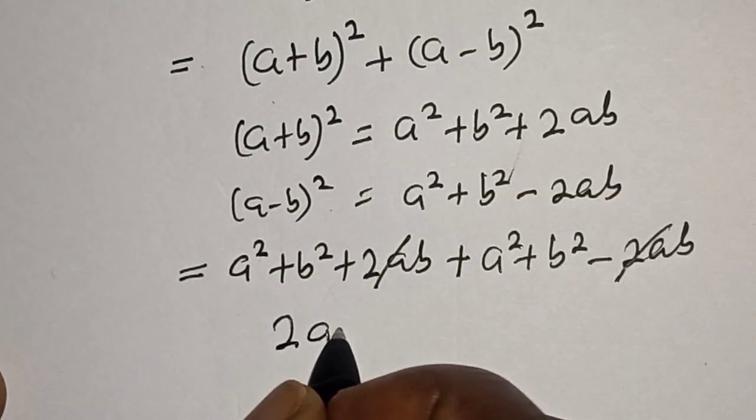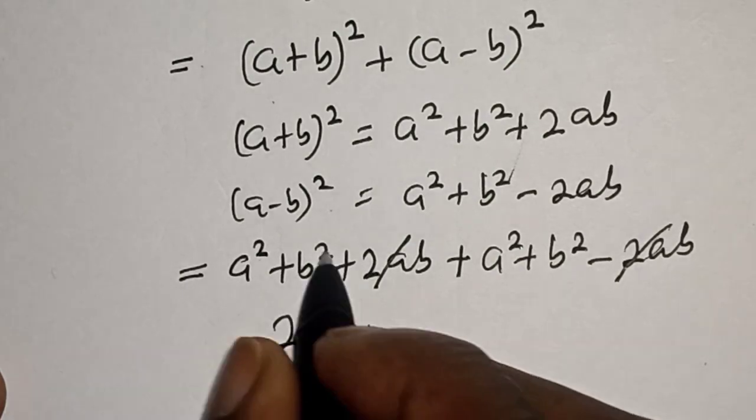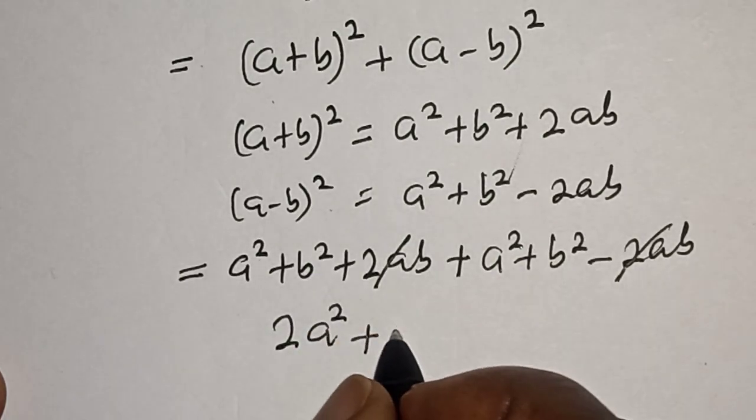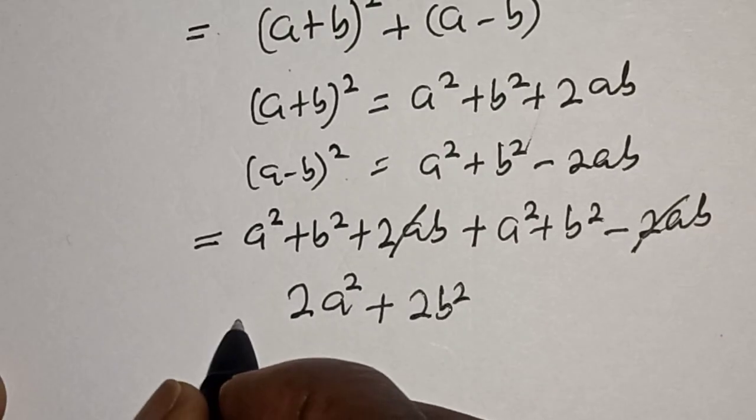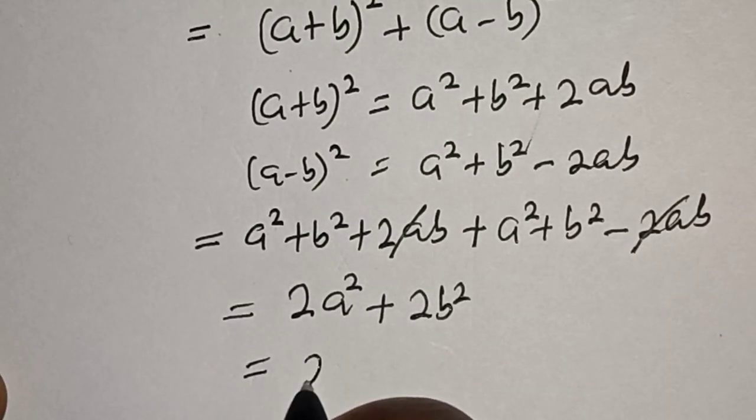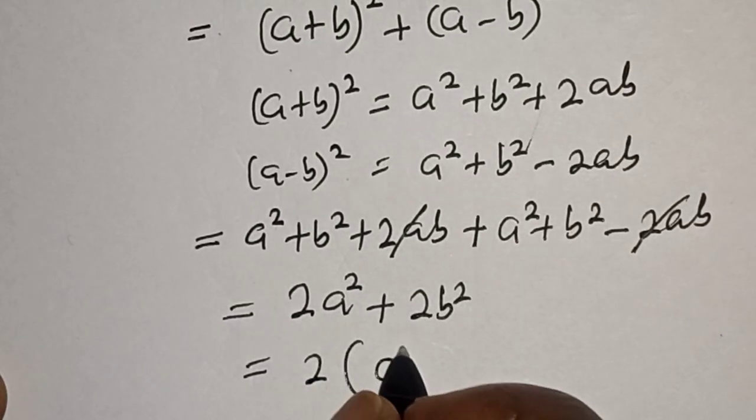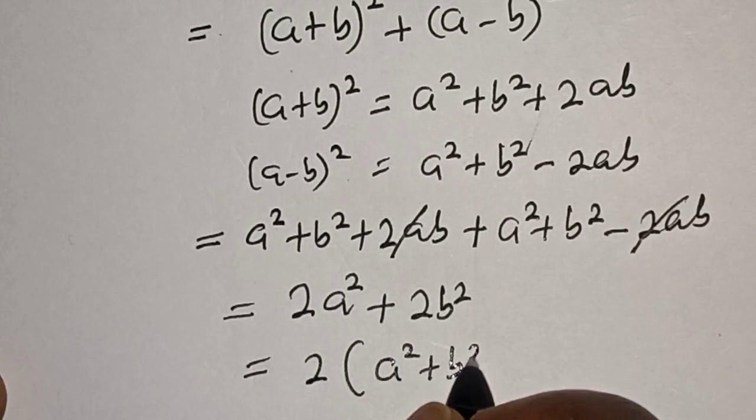This is a² + a² = 2a², plus b² + b² = 2b². And 2 is common, let's bring it out: 2(a² + b²).